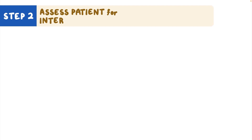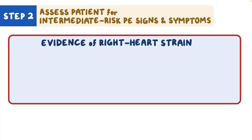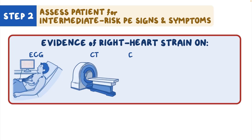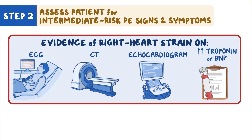Step 2: If no high-risk signs or symptoms are present, assess the patient for intermediate-risk PE signs and symptoms for poor outcomes, including evidence of right heart strain on ECG or imaging tests like CT and echocardiogram, elevated troponin levels, or elevated levels of BNP. If any of the above are present, the patient should be managed as an inpatient.